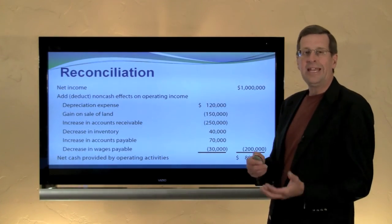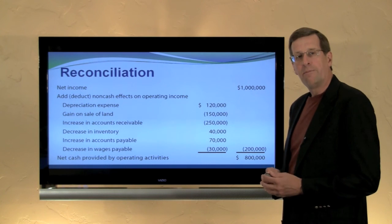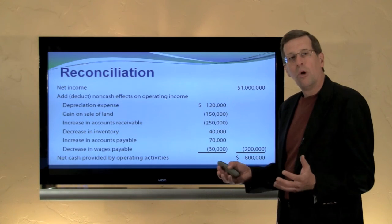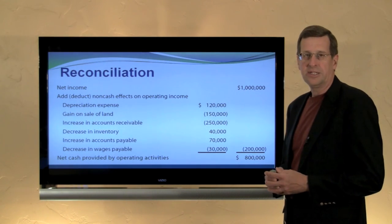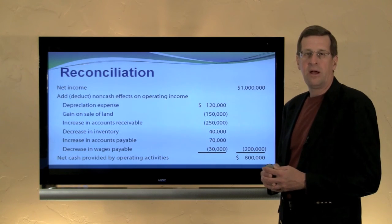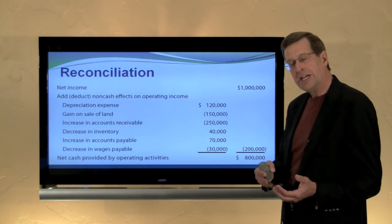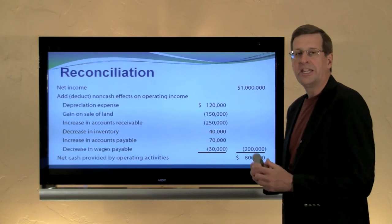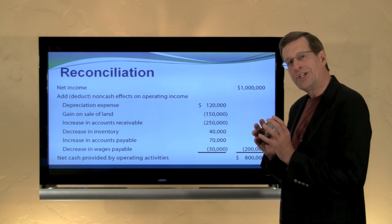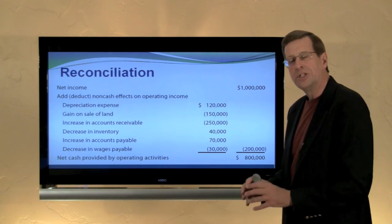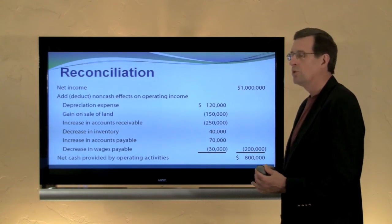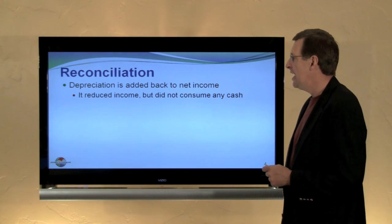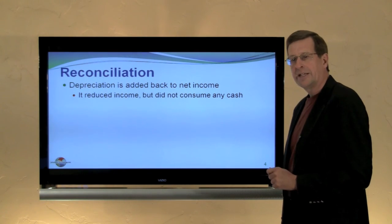Let's consider why we would be adding and subtracting things to come up with operating cash flows. If we look at depreciation expense of $120,000 here, recognize that that is a non-cash expense. Depreciation is a calculated amount. From a journal entry point of view, we debit depreciation expense and credit accumulated depreciation — there's no cash moving in that case. But it reduces net income. So depreciation reduces income but doesn't use up any cash; hence we would need to add it back. It reduced income but did not consume any cash.